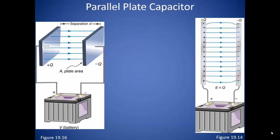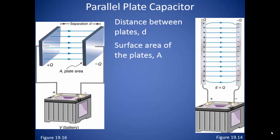If we look at two parallel plate capacitors, we can see a little better how the specific properties of each one contribute to the capacitance. Each set of plates is separated by a distance D. This distance is a space where the electric field will be produced. The plates have a certain surface area A. Comparing the two figures, the surface area of the first set of plates is less than the surface area of the second set. The charge density on the plates of a given capacitor is simply the number of charges in a given area.